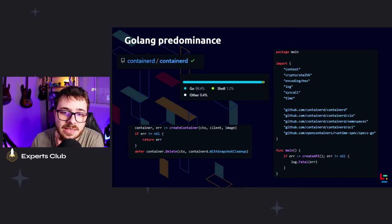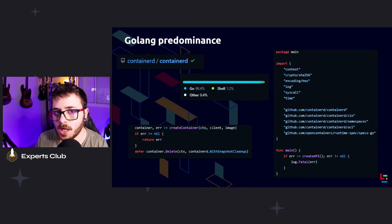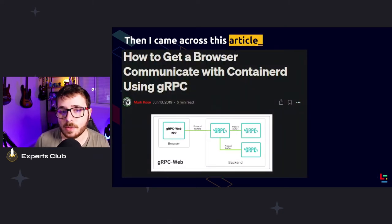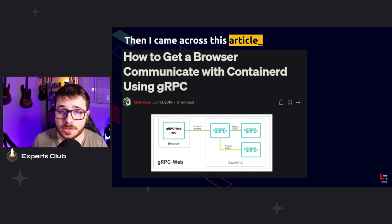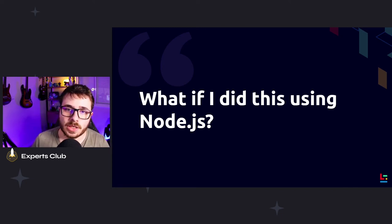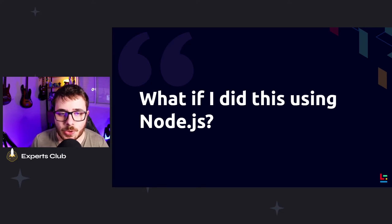I came across an article that made me think. It's not wrong to be written in Go — it's performant and great code — but it's not intuitive for those who don't know GoLang. So I found this awesome article by Marcos: how to get a browser to communicate with ContainerD through gRPC. I thought, well, if ContainerD has a gRPC interface, maybe we can integrate things into JavaScript using Node.js. I know how to integrate gRPC interfaces using Node.js.